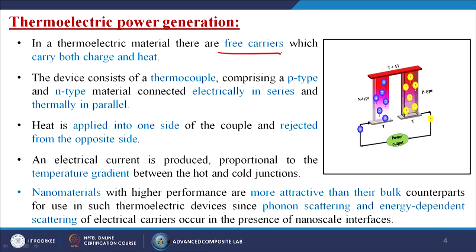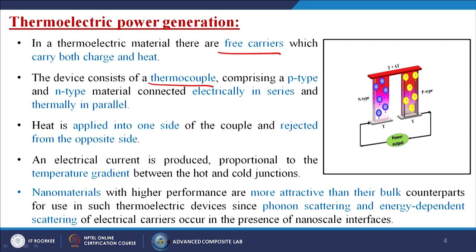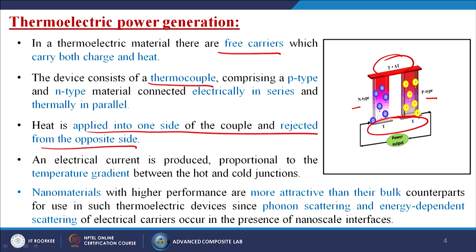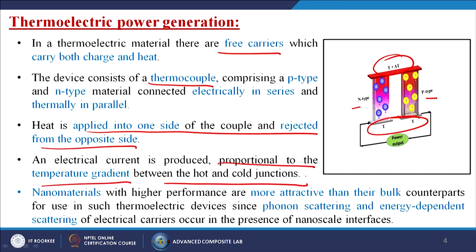In a thermoelectric material there are free carriers which carry both charge and heat. The device consists of a thermocouple comprising a p-type and an n-type material connected electrically in series and thermally in parallel. Heat is applied to one side of the couple and rejected from the opposite side. We are giving the temperature T plus ΔT — where T is the initial temperature and ΔT is the change in temperature. An electrical current is produced proportional to the temperature gradient between the hot and cold junction.